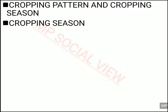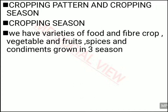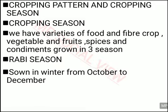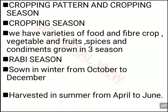Now let us read about the cropping pattern and cropping season of India. We have many cropping seasons in our country, and a variety of foods are grown — from food to fiber, vegetables, fruits, spices and condiments. We have three cropping seasons. The first one is the Rabi season, which starts in winter from October to December and is harvested from April to June.